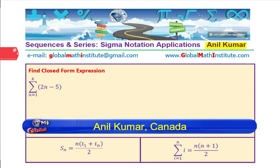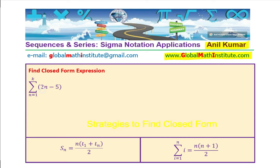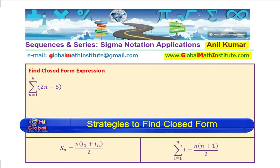I am Anil Kumar, welcome to my YouTube channel and the website Global Math Institute. In this video, we will find the closed form expression for the summation of 2n minus 5, where the index n changes from 1 to k.